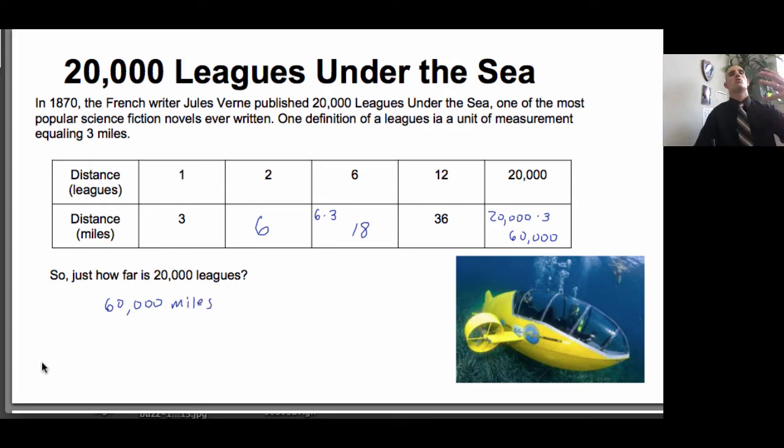We're setting up these ratios. One league equals three miles. Two leagues would equal six. Three would be nine. So three over one equals nine over three. Two over one equals six over two. One over one equals three over three. We're always taking our number of miles divided by three to get our leagues.